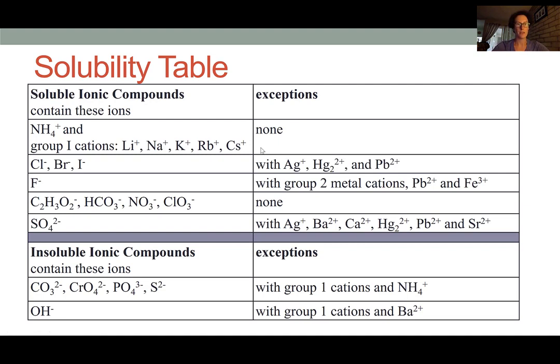On the other hand, these halogens, chlorine, bromine, and iodine, they tend to form soluble compounds. And when combined with most cations will not form a solid precipitate.